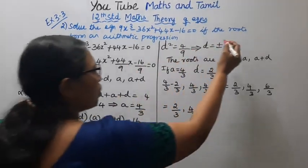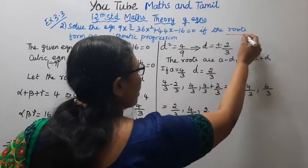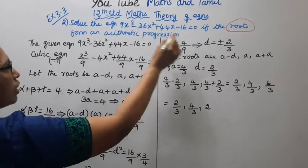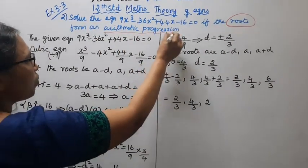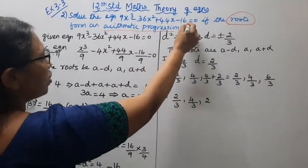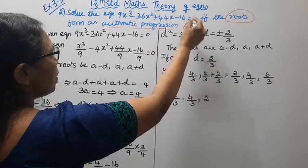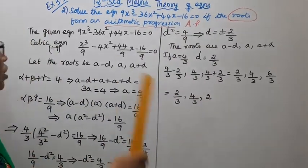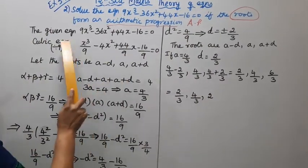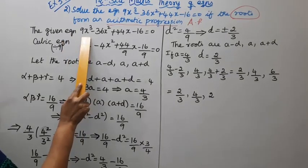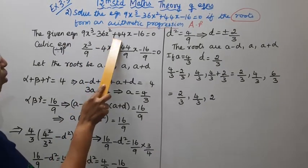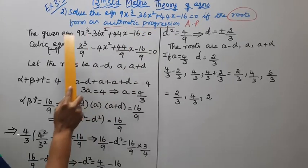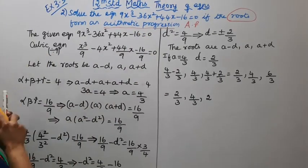The roots form an arithmetic progression, AP. For one cubic equation, the given equation is 9x³ minus 36x² plus 44x minus 16 equal to 0.